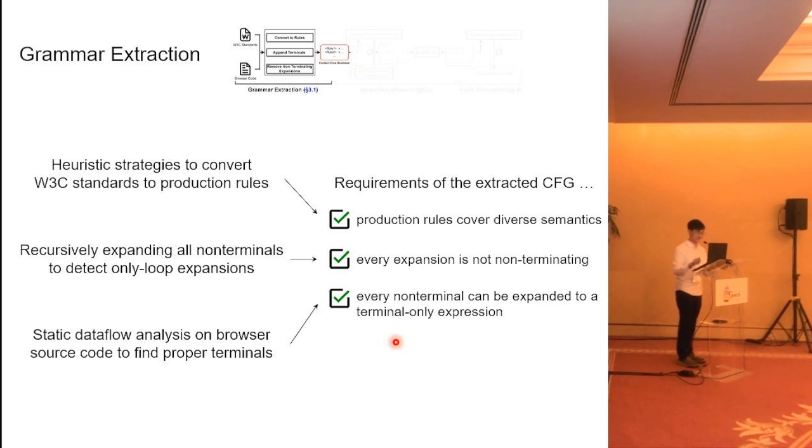Our tool can satisfy these requirements, but due to time constraints, I cannot explain the details today. But simply speaking, for the first requirement, we propose several heuristic strategies. For the second requirement, we detect and delete those non-terminal symbols whose production rules will lead to infinite loop. For the third requirement, we conduct a static data flow analysis on browser source code to find proper terminal symbols. Finally, we can make sure every non-terminal symbol can be expanded to a terminal-only expression.